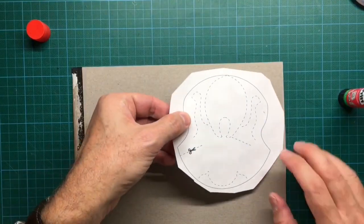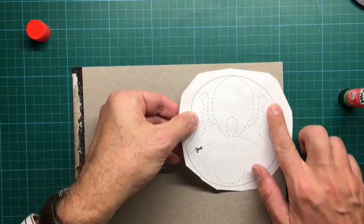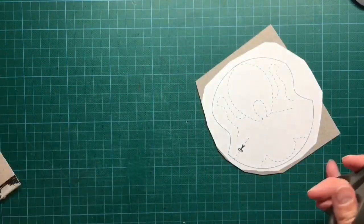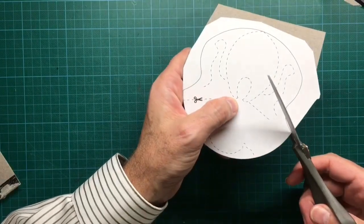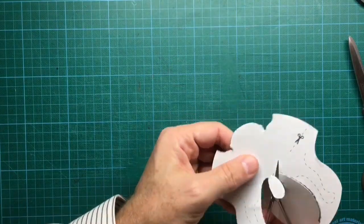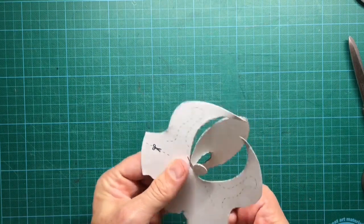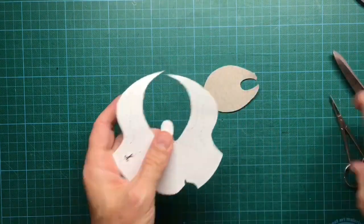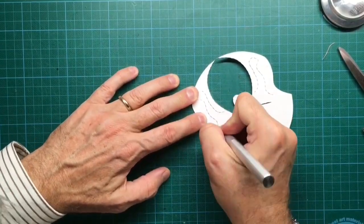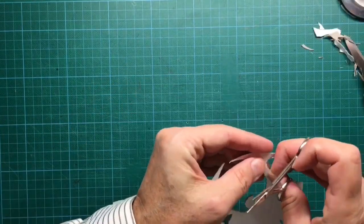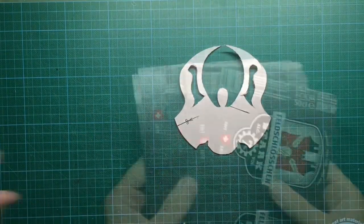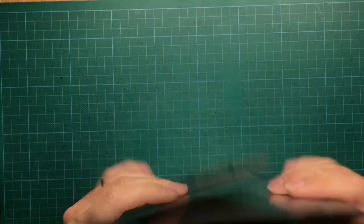After you glue the printout to the cardboard, cut it out with scissors. Finish the cardboard template by cutting out the arms with the knife, and now you're ready to transfer the design onto the aluminum sheets.